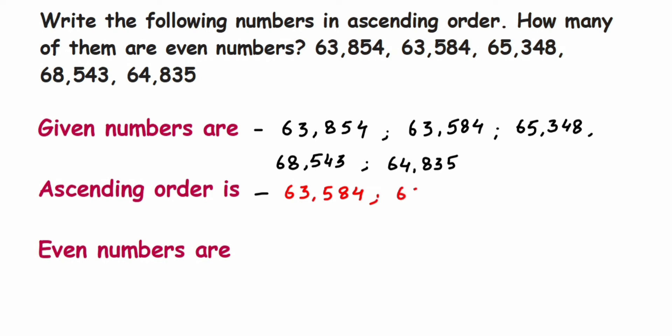After 63, we have a number in 64,000, then 65, then 68. Since 64,000 is next greater than 63, we will write down 64,835.